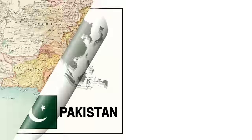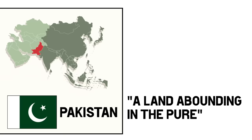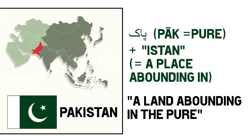Back to the mainland, we have Pakistan. The name of the country was coined in 1933, as an acronym referring to the names of the five northern regions of the British Raj: Punjab, Afghania, Kashmir, Sindh, and Baluchistan. If translated literally, it means something like a land abounding in pure, in reference to the word Pak meaning pure in Persian and Pashto, and the suffix -istan which means a place abounding in — so like place of X. This is why so many of the country names in these areas end with -istan.